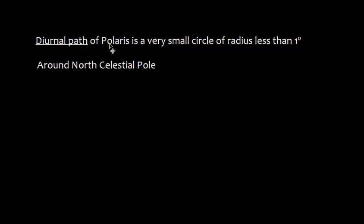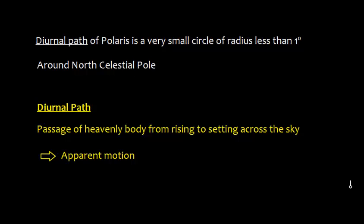The diurnal path of Polaris is a very small circle of radius less than 1 degree and this path is around the North Celestial Pole. Now, you may wonder what is a diurnal path? The passage of heavenly body from rising to setting across the sky is called diurnal path.